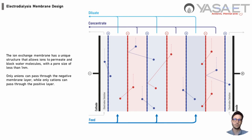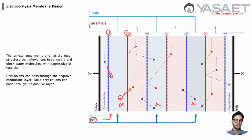To talk more precisely about the design of a membrane stack: on the left side we have the cathode, on the right side we have the anode, and we have different flow paths. The water feed comes from the bottom and goes through chambers formed by the positive and negative membranes. The positive ions flow through the positive charge membrane while the negative ions flow through the negative charge membrane — so we refer to these as selective membranes. The positive ions flow towards the cathode while the negative ions flow towards the anode.